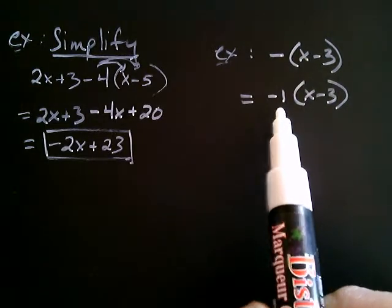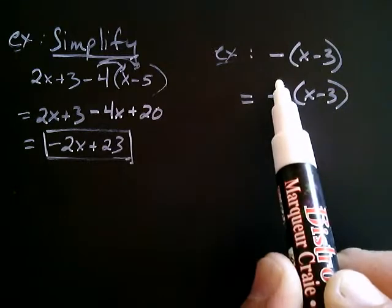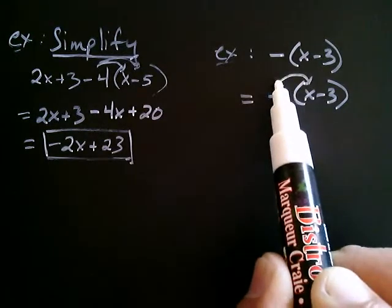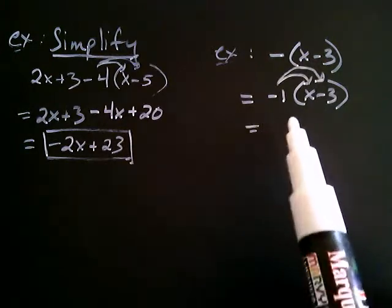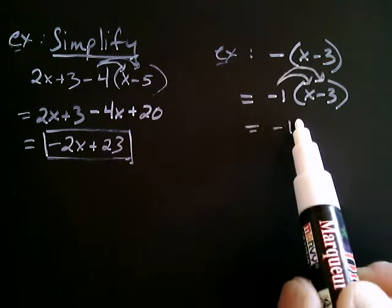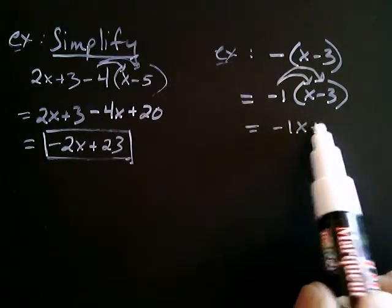Now, with that negative 1 there, what we then do is we distribute it over the x minus 3. So, negative 1 times x, and then negative 1 times negative 3. And that's going to give negative 1x, and now negative 1 times negative 3 is positive 3.